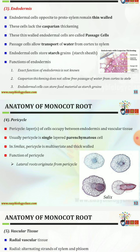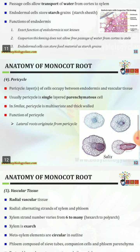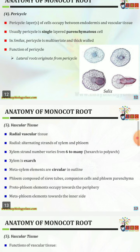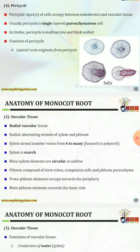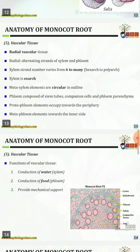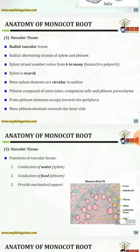The fourth part is the pericycle, consisting of layers of cells between the endodermis and vascular tissues. Usually, the pericycle is single-layered and parenchymatous. In Smilax, the pericycle is multilayered. The function of the pericycle is that lateral roots originate from it.